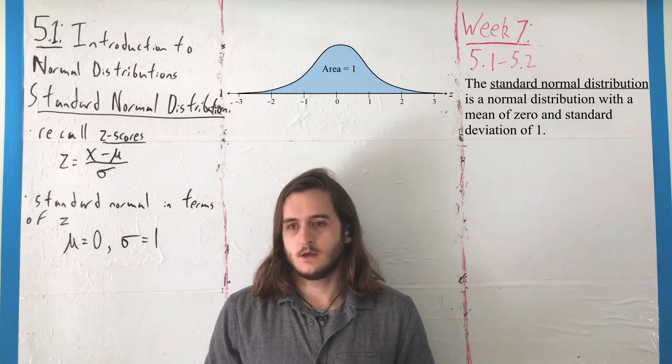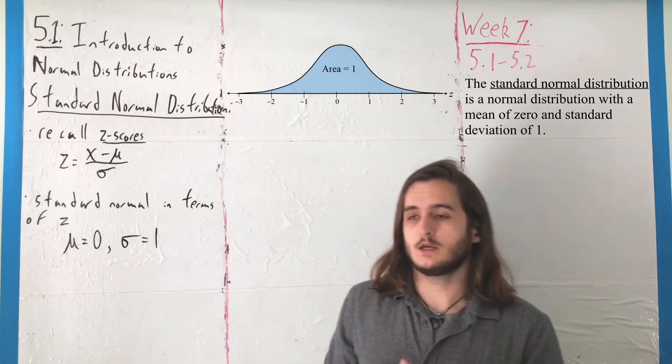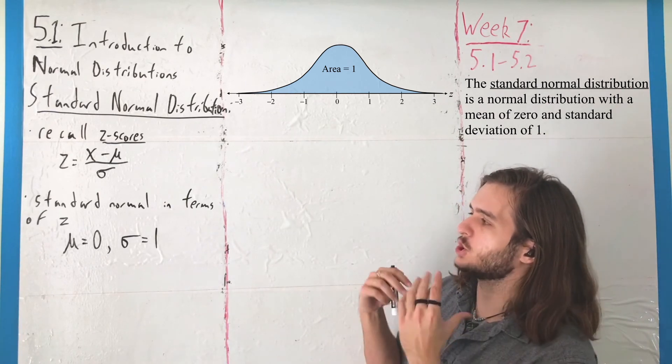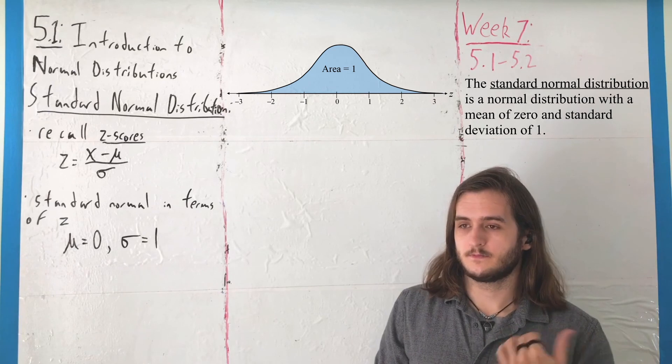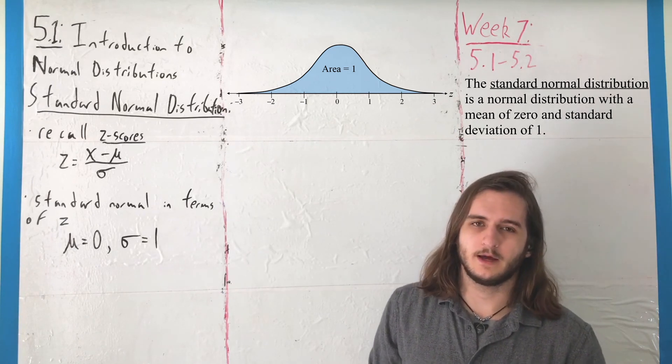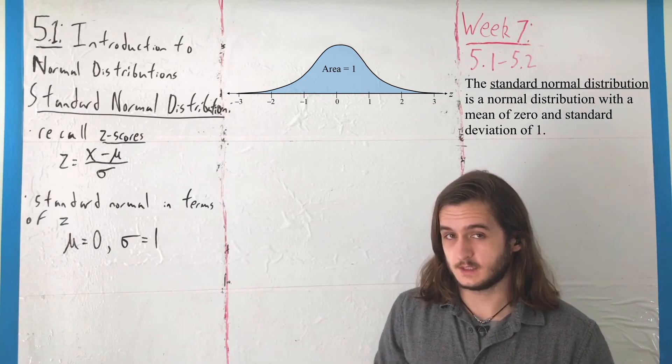In any case, the bulk of our work for this chapter is going to be discussing probabilities in terms of normal distributions, where next we're going to see how we can talk about that first with the standard normal.